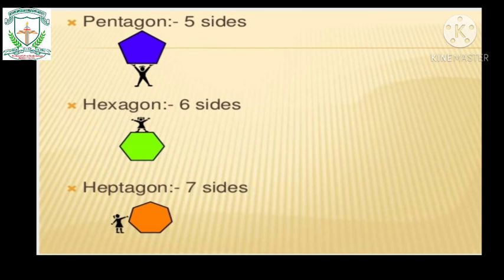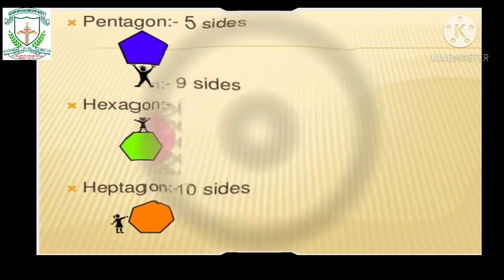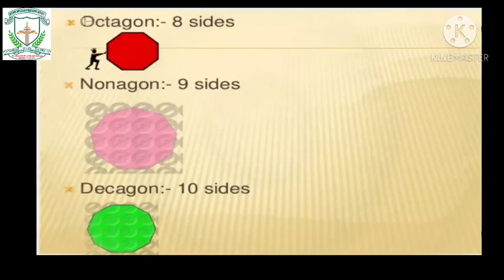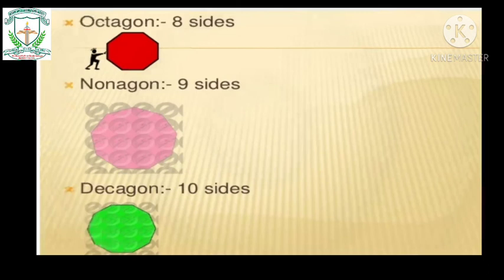Then the heptagon: a polygon with seven sides. Next, the octagon: a polygon with eight sides. Then the nonagon: a polygon with nine sides. And finally, the decagon: a polygon with ten sides.